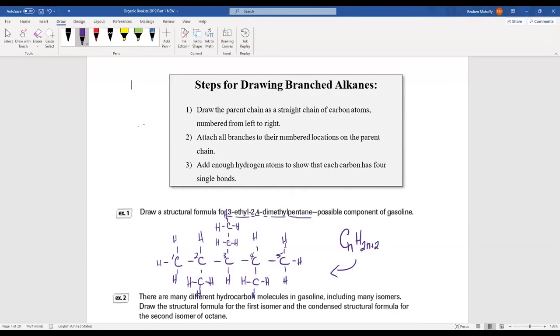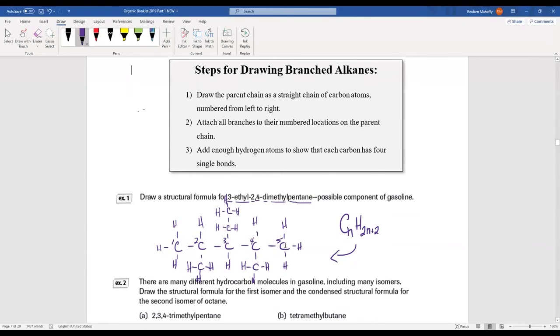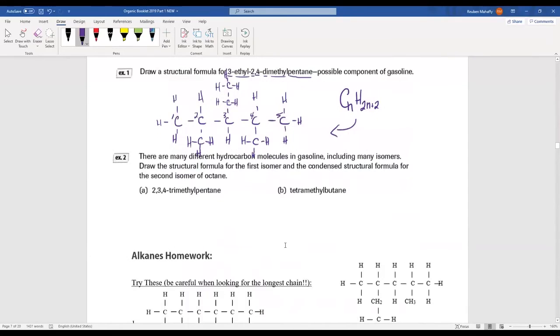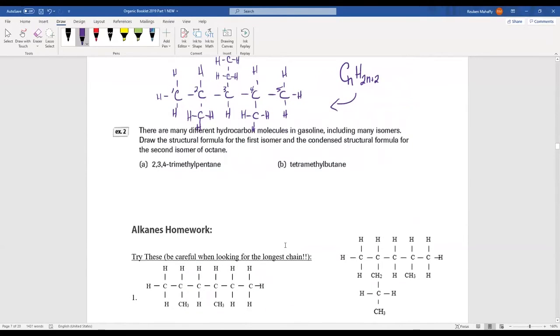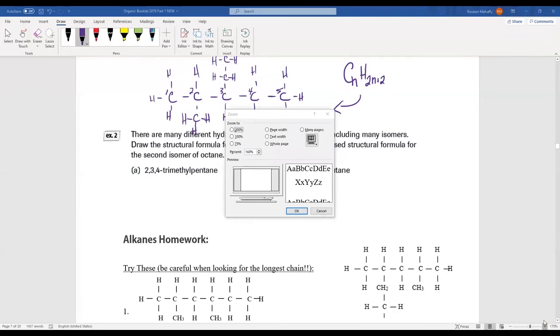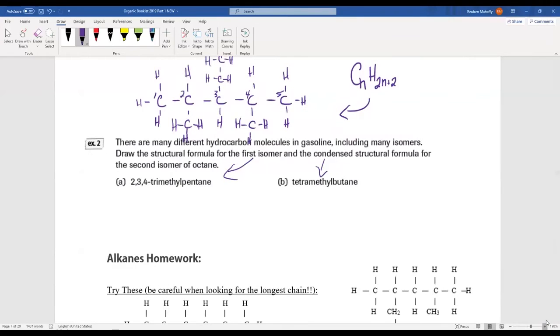Let's try another example. Isomers we'll talk about in a future lesson, but isomers have different structural formulas but the same general formula—the same number of carbons and hydrogens. We can draw structural formulas. We'll do the structural formula for the first molecule here and we'll do the condensed structural for the second, so we have a chance to practice that too.